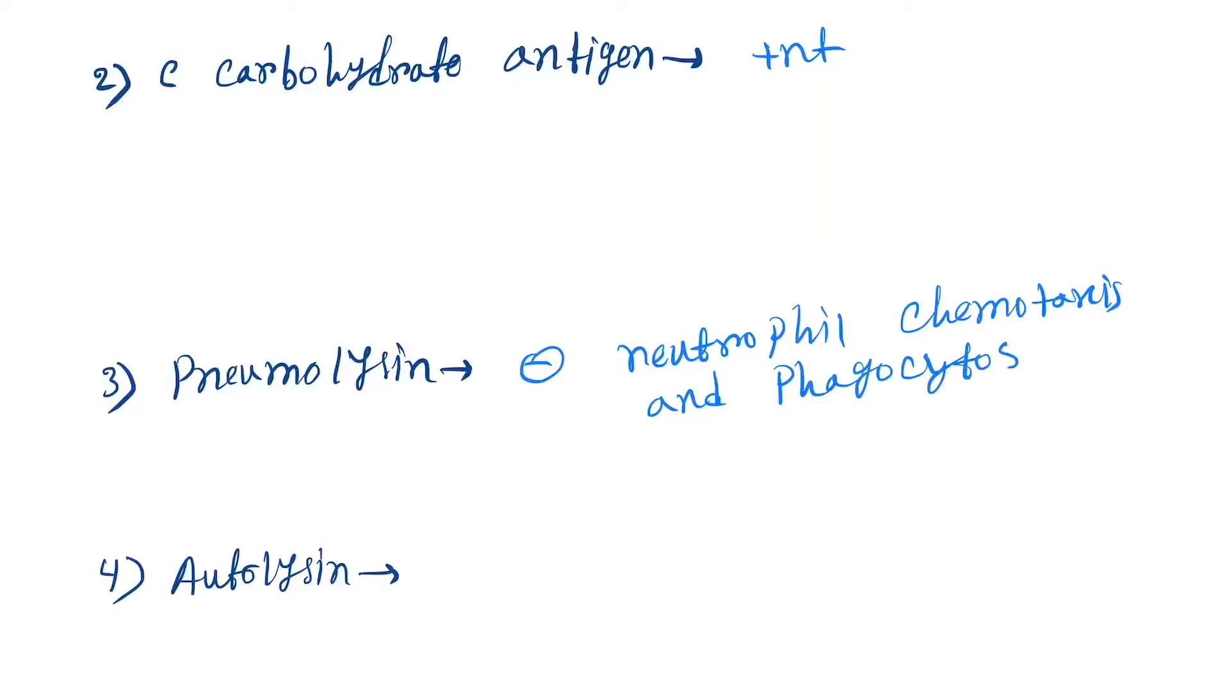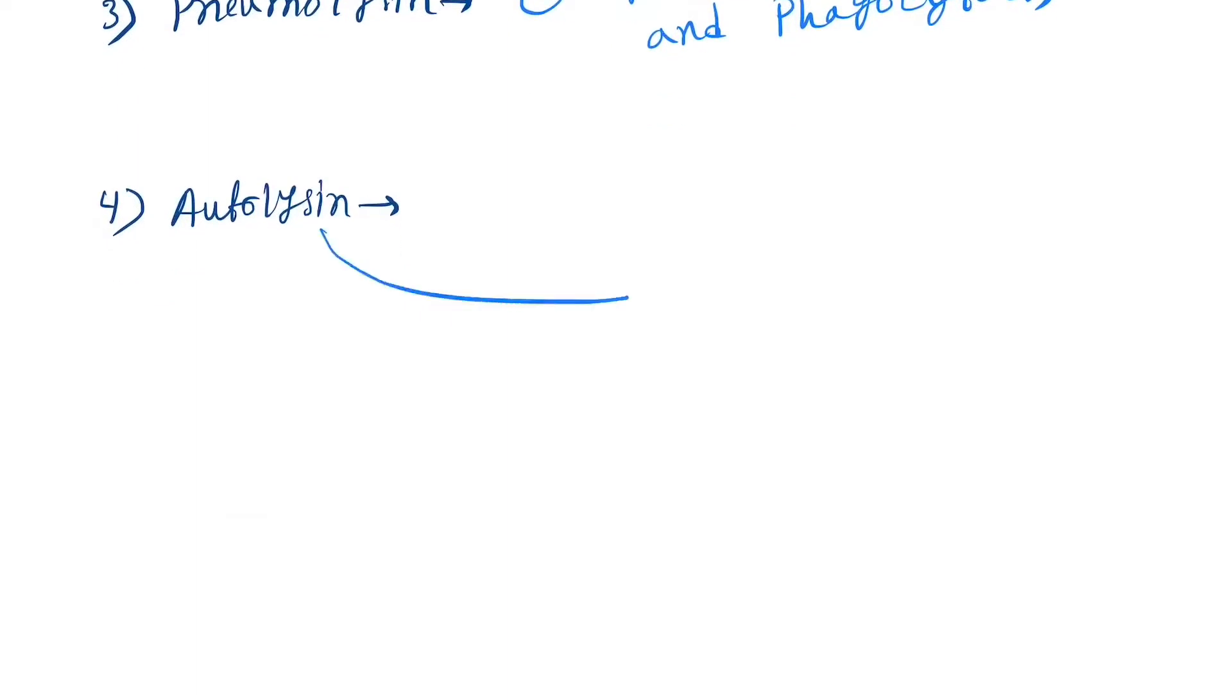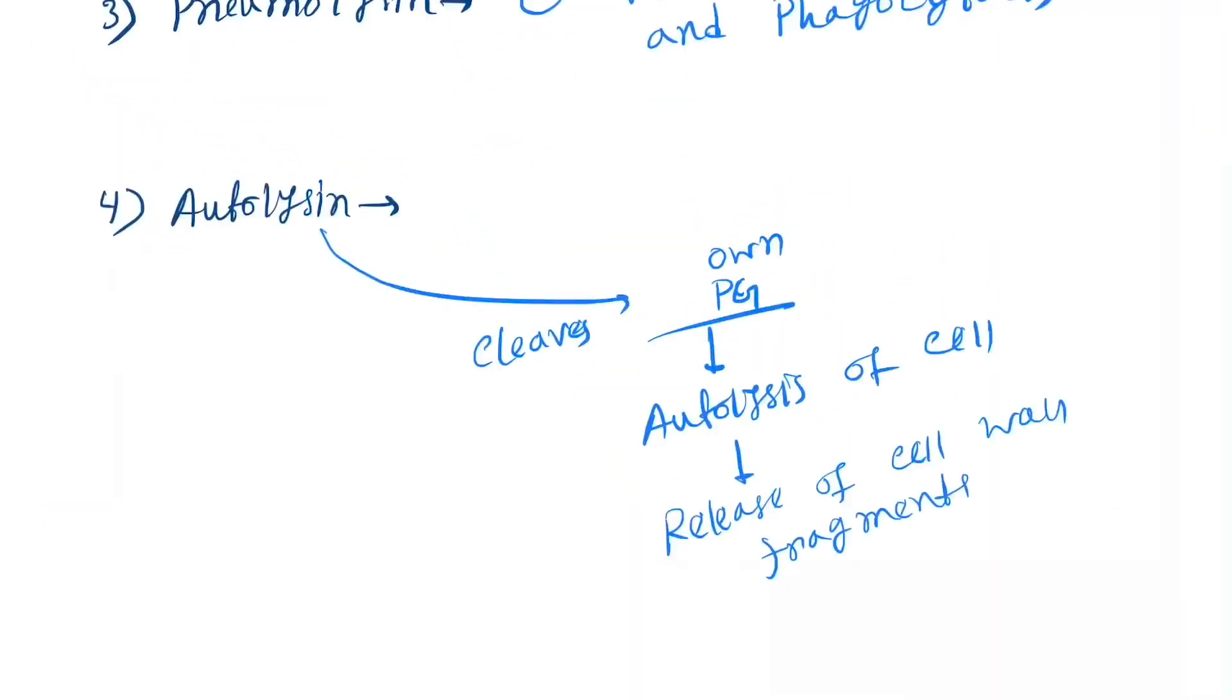Now autolysin. Autolysin cleaves the peptidoglycan. As a result, autolysis of the cell, which leads to release of cell wall fragments. These cell wall fragments lead to inflammatory response.